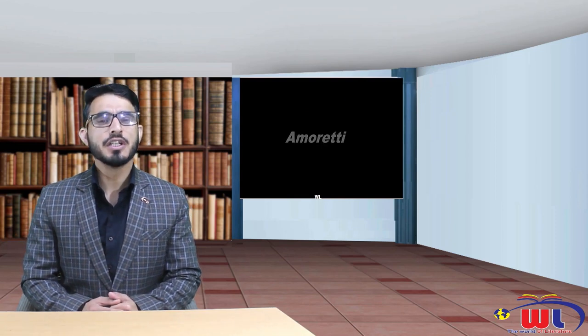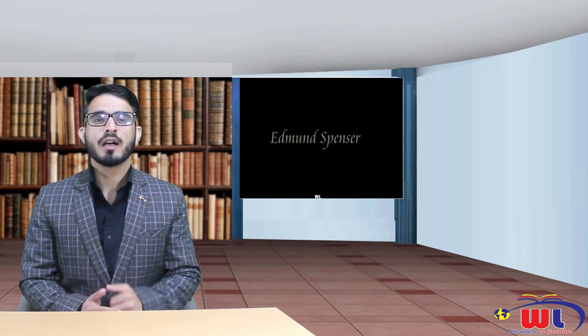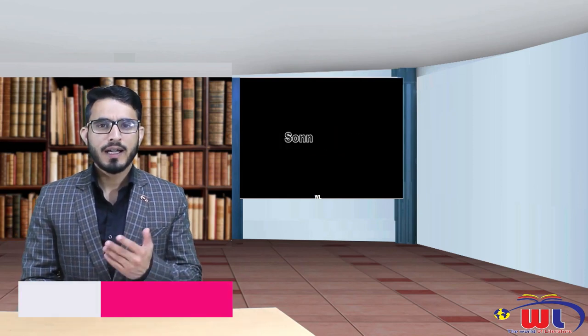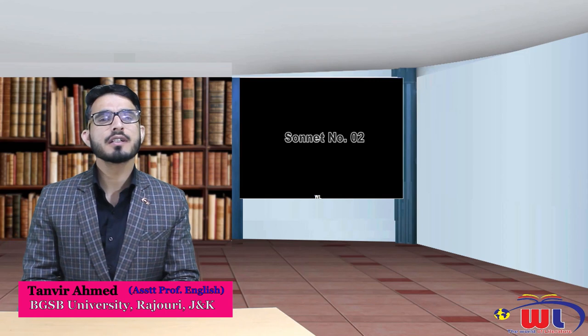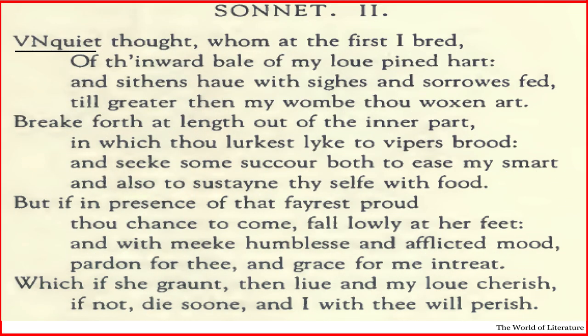We will have a look at the meter of the sonnet, which is a very significant component of writing poetry. Let's take a look at the first verse of the sonnet and see what meter does Edmund Spenser follow. Coming to the first verse of this sonnet — that is the second sonnet — it reads: 'Unquiet thought, whom at the first I bred.'